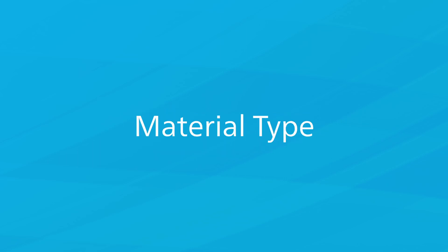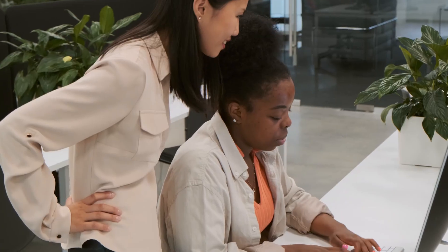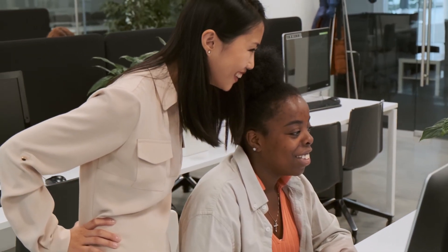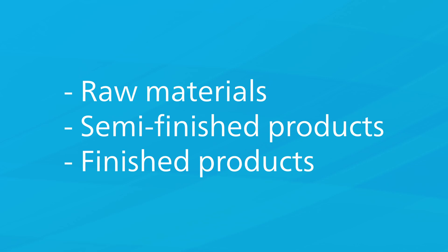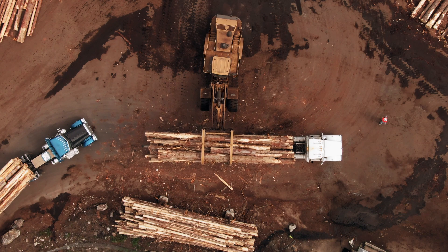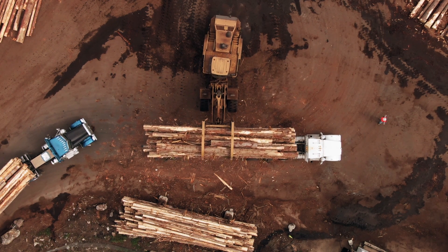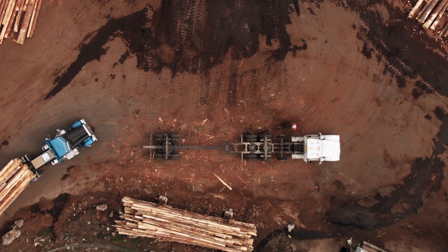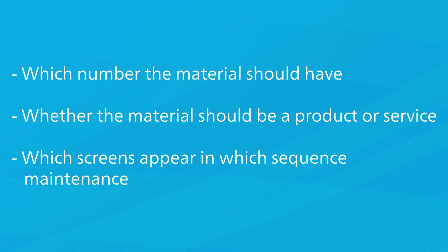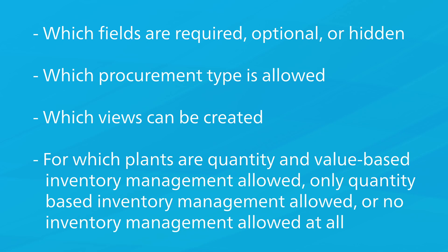Each time you create a new material master record, you must select a material type to which the material is to be assigned. Materials with the same properties are assigned to the same material type — examples include raw materials, semi-finished products, and finished products. The material type controls which number the material should have, whether the material is a product or service, which screens appear and in which sequence, which fields are required, optional, or hidden, which procurement type is allowed, which views can be created, and whether quantity and value-based inventory management is allowed.